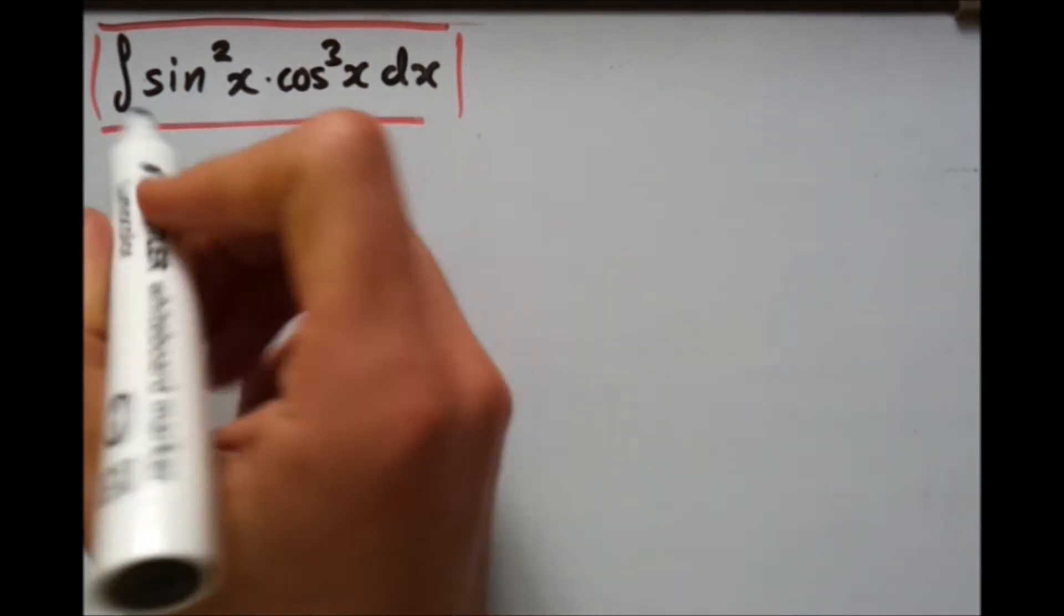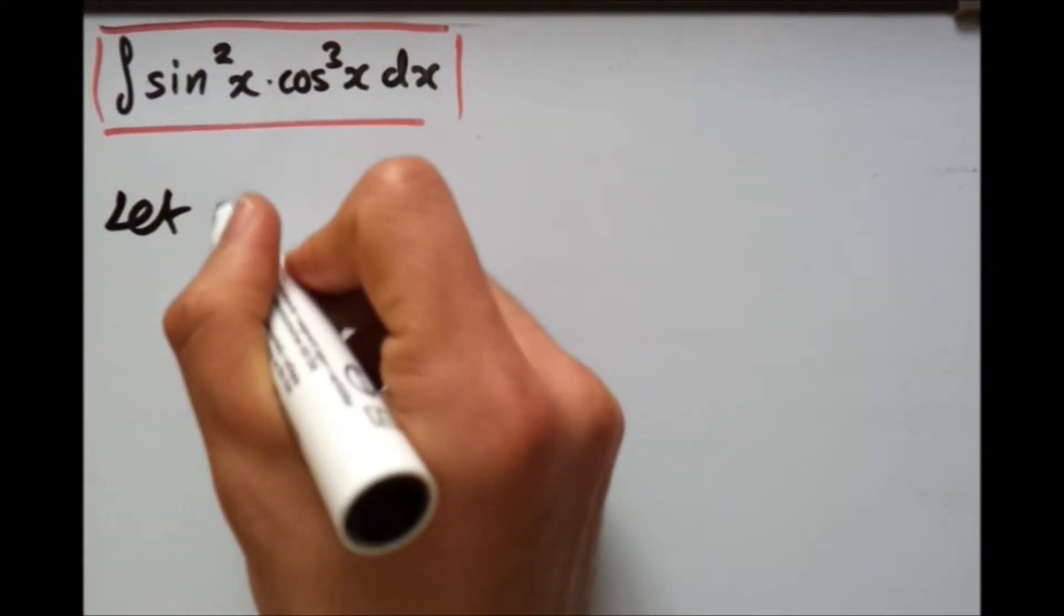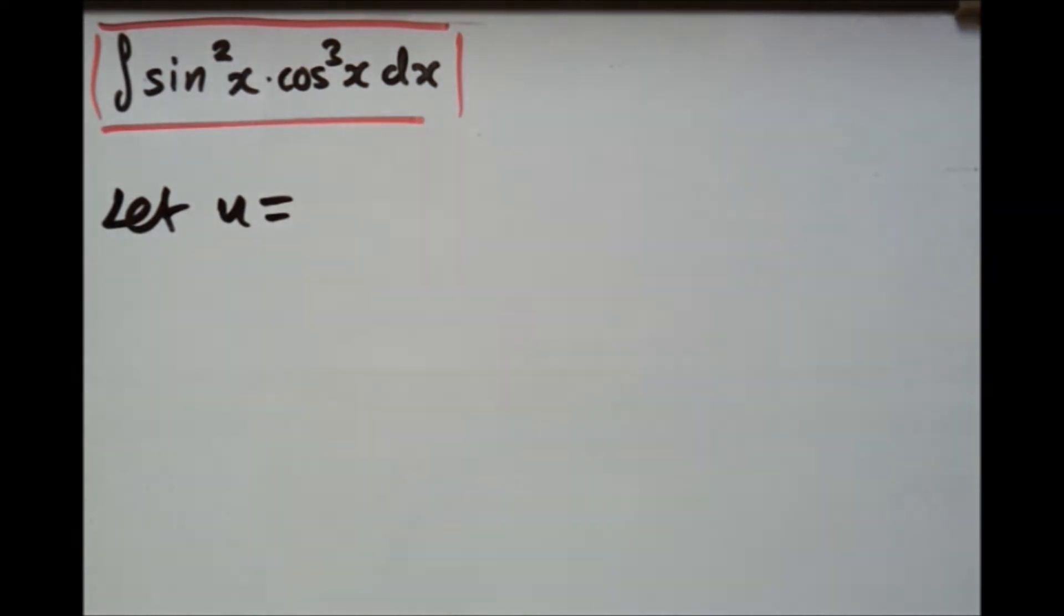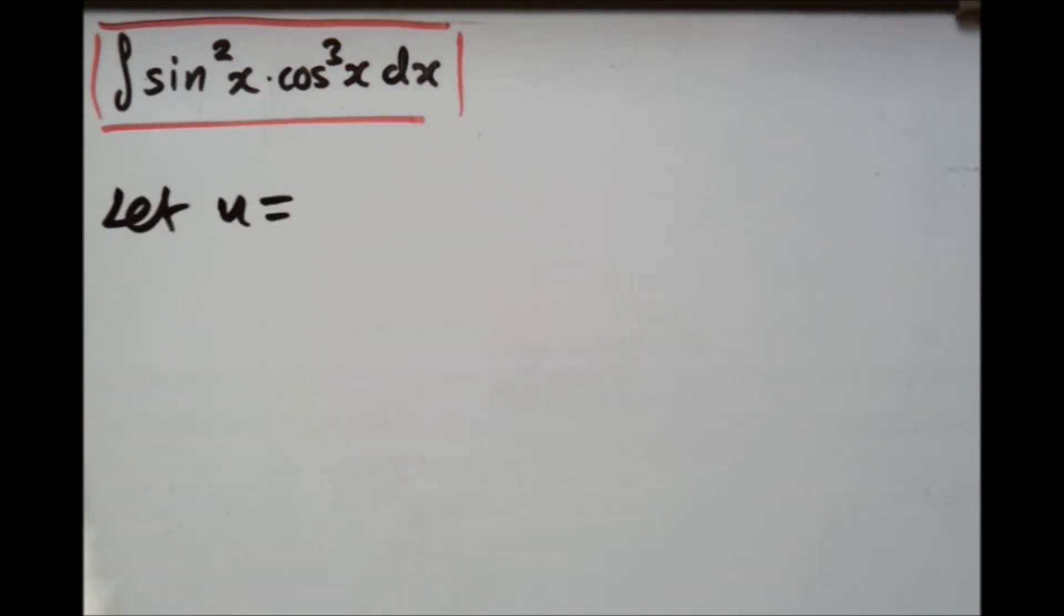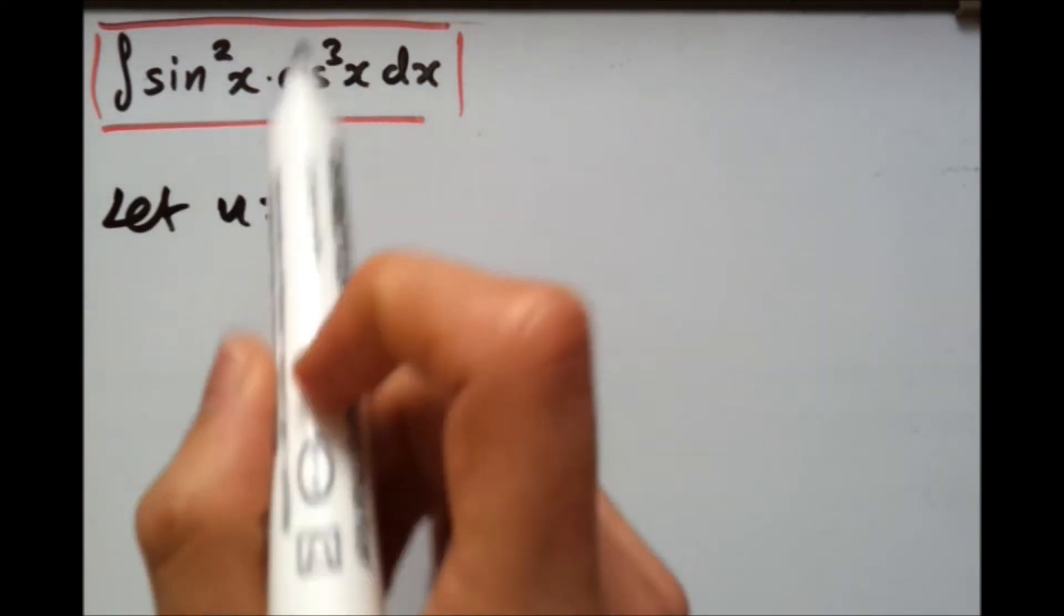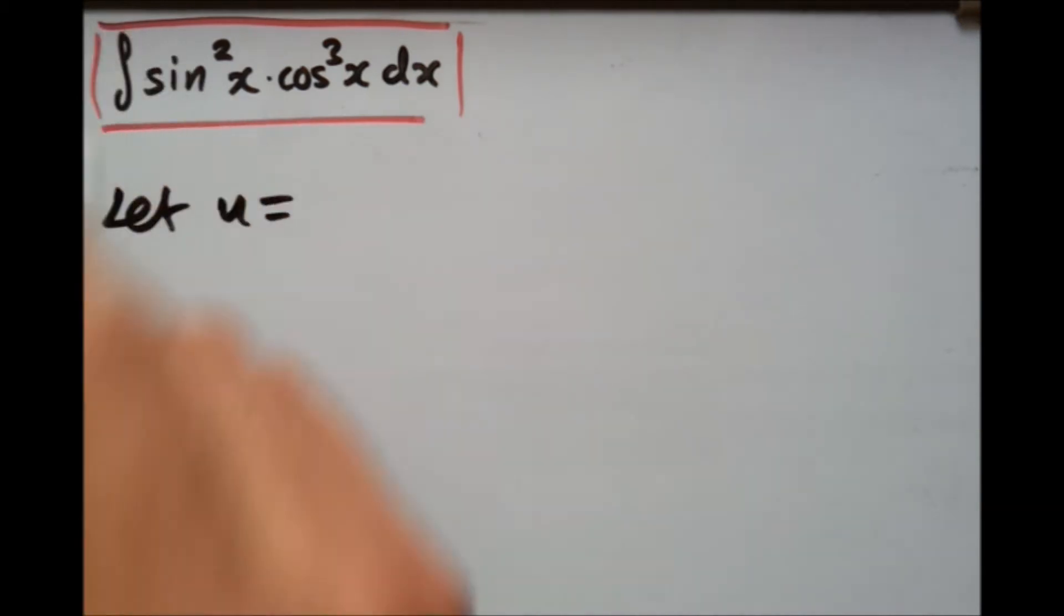Well, in this case, because we use a substitution, we obviously have to consider what U would be. But in this case, for this particular example where you have one power which is a 2 and other ones a 3, even if it's cos squared and sin cubed which is that way around, we must always choose the one at the lower power.